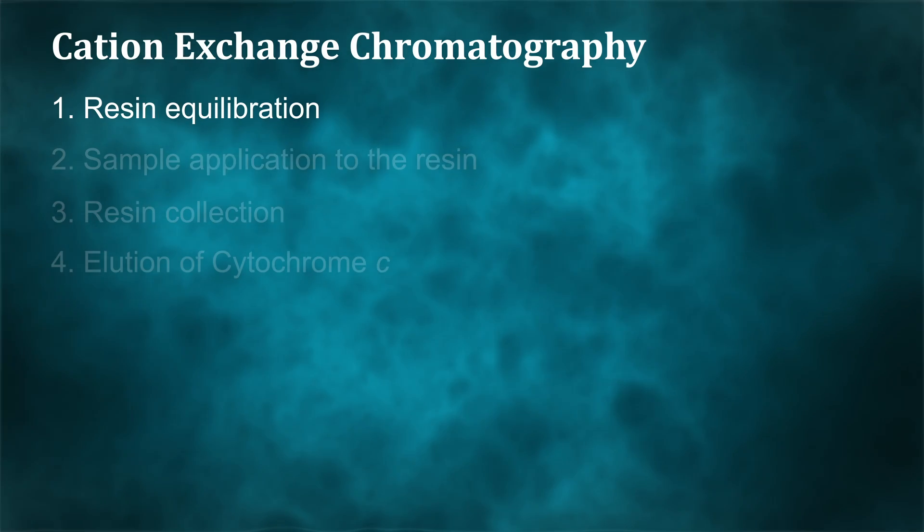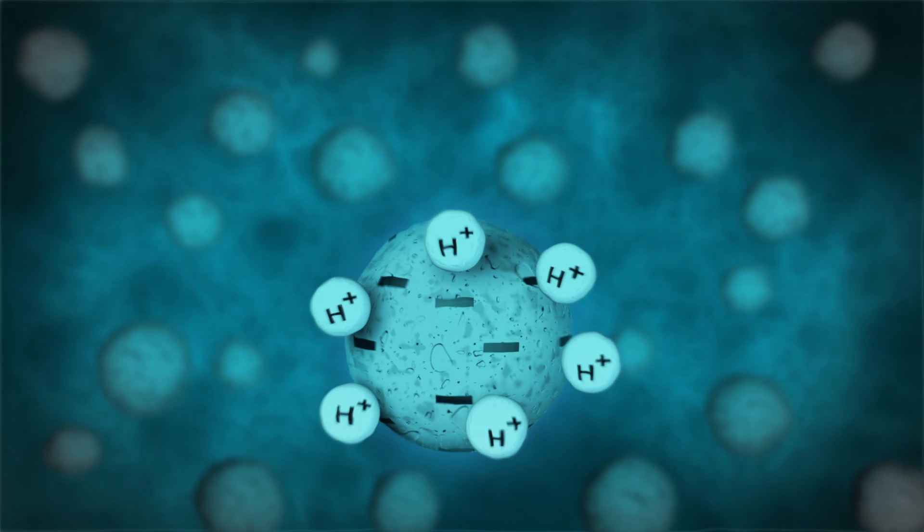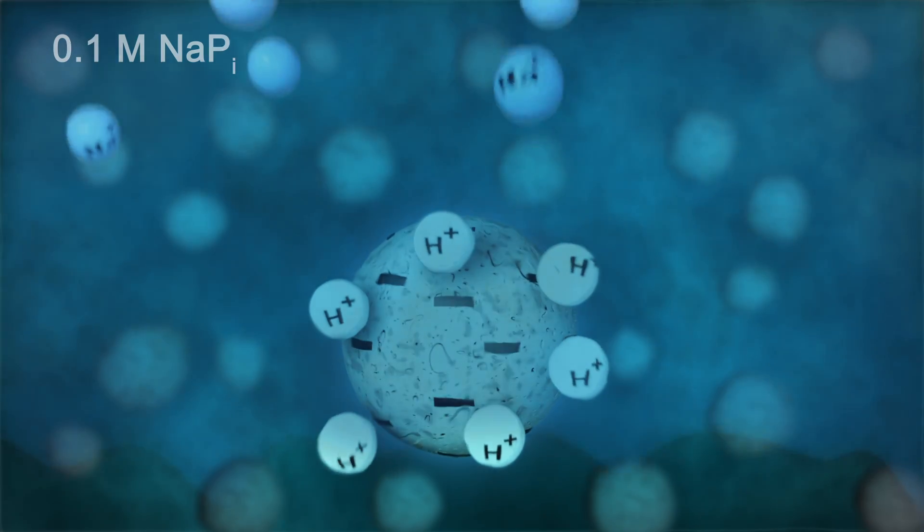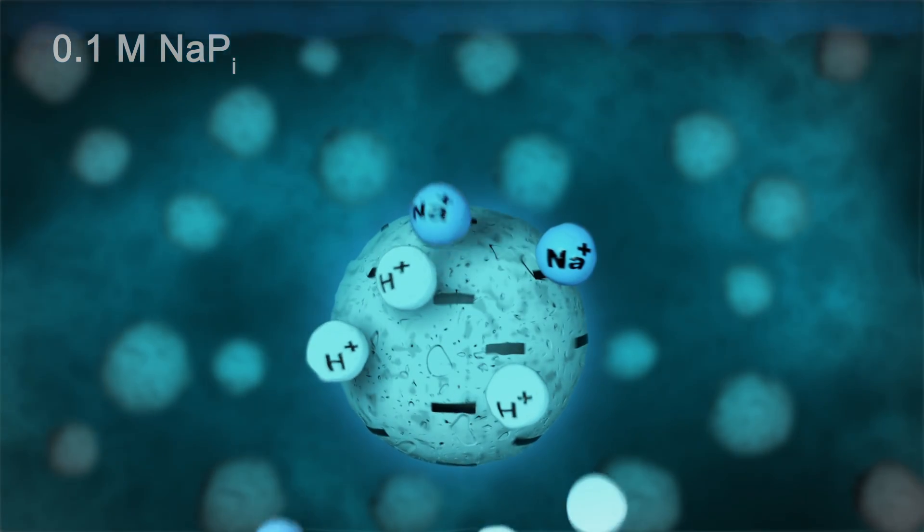Resin equilibration: Cation exchange resin beads are equilibrated using two washes of 0.1 molar sodium phosphate buffer at pH-7.